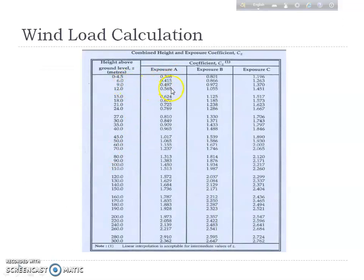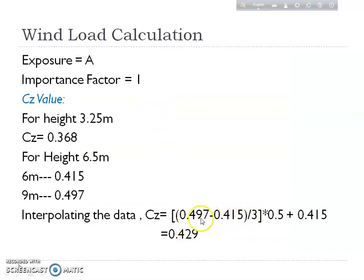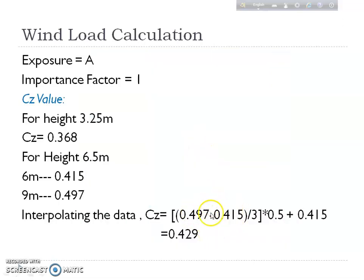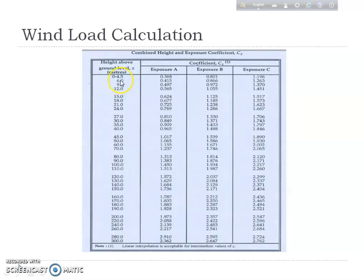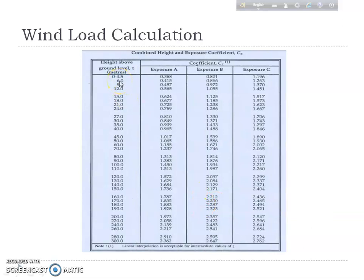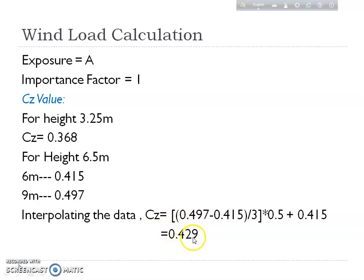For height 6.5 meters, the chart shows values at 6 meters and 9 meters under Exposure A, but not at 6.5 meters, so we must interpolate. Using the interpolation formula — subtracting 0.497 and 0.415, dividing by the difference of 3, then multiplying by (6.5 − 6 = 0.5) and adding 0.415 — gives CZ = 0.429 for 6.5 meters. For 3.25 meters, CZ = 0.368.